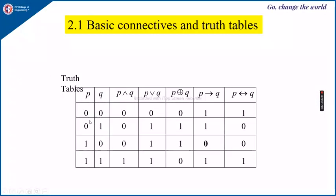Then P AND Q will be 0 for (0,0), 0 for (0,1), and 0 for (1,0). Only for (1,1) will P AND Q be 1. This indicates that for P AND Q, both P and Q must be true. Otherwise, if one is true and the other is false, or if both are false, then P AND Q will be false.